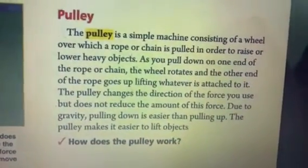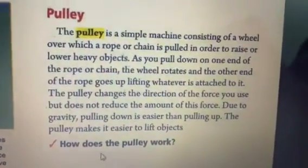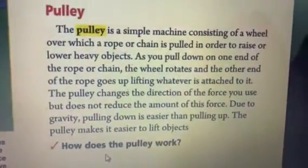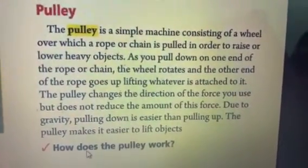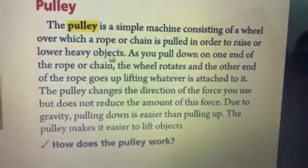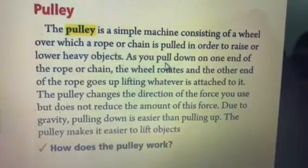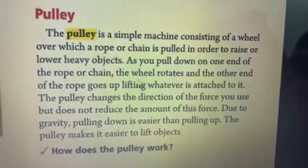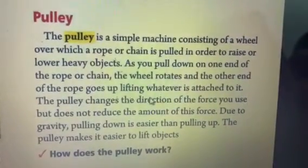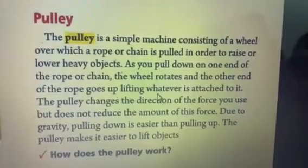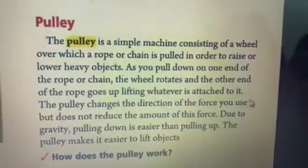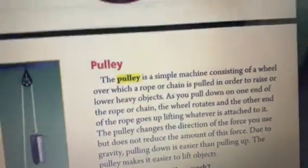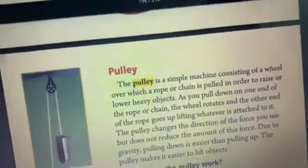How does the pulley work? As you pull down one end of the rope or chain, the wheel rotates and the other end of the rope goes up, lifting whatever it is attached to. That is the answer.